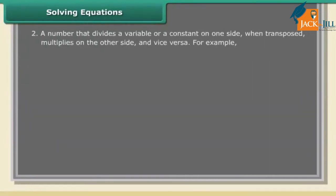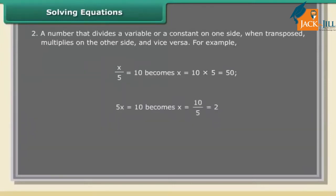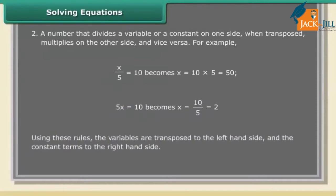Rule 2: a number that divides a variable or a constant on one side, when transposed, multiplies on the other side, and vice versa. For example, x/5 = 10 becomes x = 10 × 5 = 50. And 5x = 10 becomes x = 10/5 = 2. Using these rules, variables are transposed to the LHS and constant terms to the RHS.